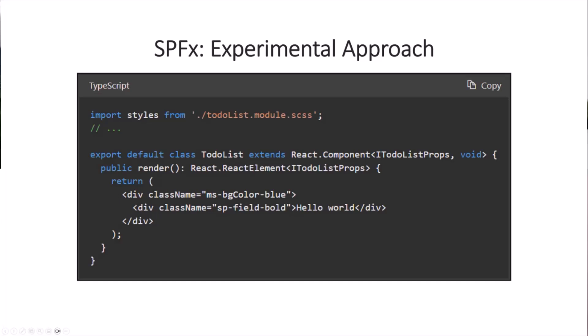In terms of SPFx, the latest and greatest approach as far as I understand is to use tokens that appear like this. In your SPFx web part, you can then reference your classes this way. However, this is a bit experimental. You could also hard-code the classes this way. The only trick is how do you know which classes are available to you?